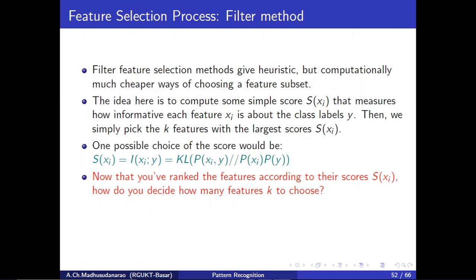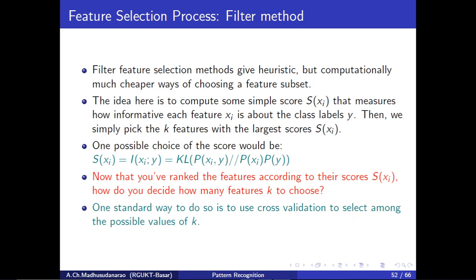Now we will try to rank those features according to their scores in the decreasing order. High score means that feature is good for classification; low score means it is bad for classification. One standard way to select how many features K to use for our classification — K will in general be much less than D, as that is our expectation to reduce dimension — is to take the help of cross-validation. We will train a classifier and test on the classification model; if it gives better results we will consider that subset.